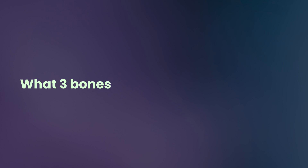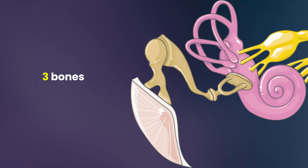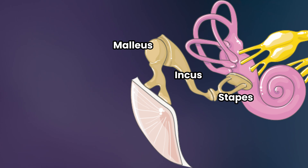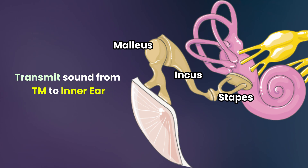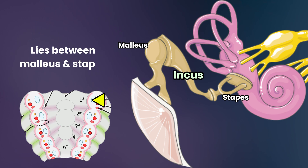The three bones located in the middle ear — the auditory ossicles — are the malleus, incus, and stapes. Together, they transmit sound from the tympanic membrane to the inner ear. The malleus, which is attached to the tympanic membrane, derives from the first branchial arch. The incus, which lies between the malleus and the stapes, also derives from the first branchial arch.